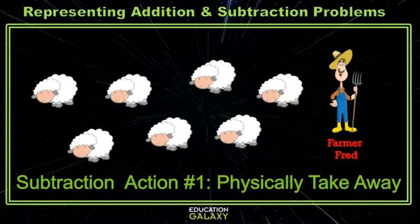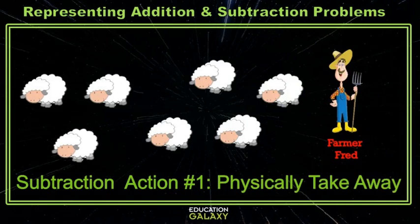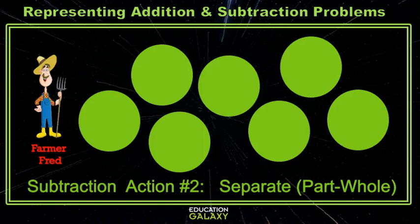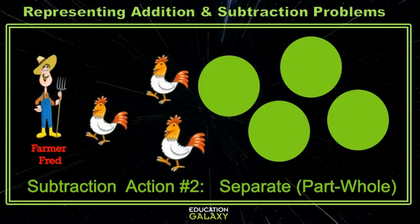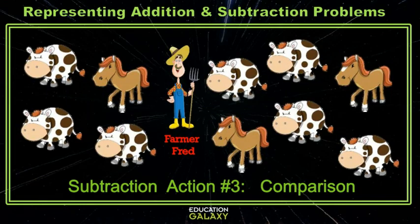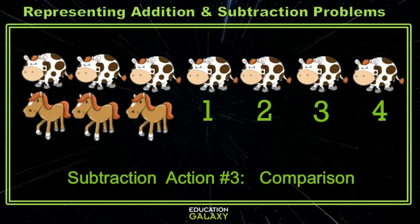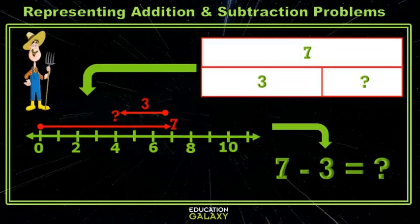There are three different subtraction actions that we need to talk about: physically taking away, separating parts and wholes, and comparing. All of these situations are actually 7 minus 3 equals 4, but they're different real-world situations.